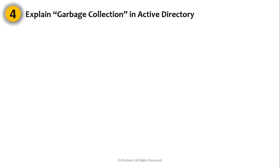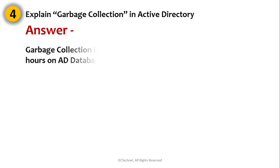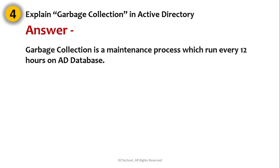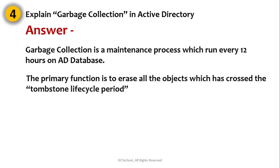Question number four: Explain garbage collection in Active Directory — very important. Garbage collection is a maintenance process that runs every 12 hours on the Active Directory database. The primary function of this garbage collection process is to erase all the objects which have crossed the tombstone lifecycle period.